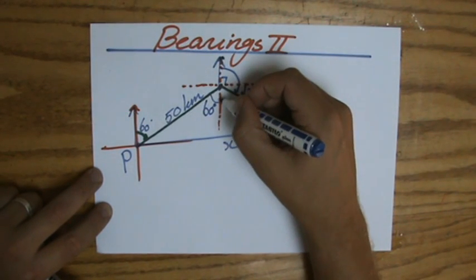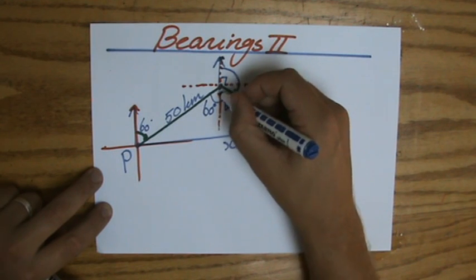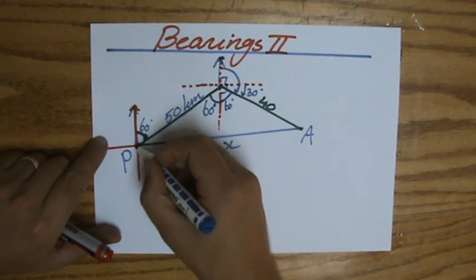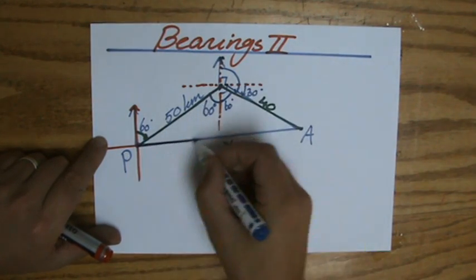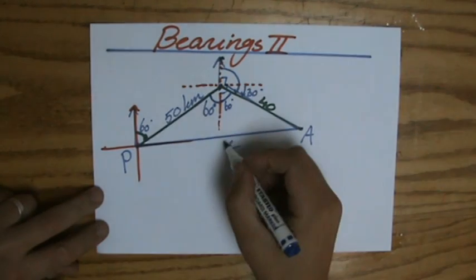Now if this is 30, how much is this one? It's also going to be 60 degrees because the whole thing is 90. So that entire angle here, if I look at the big triangle, it's going to be 120 degrees. I have x.